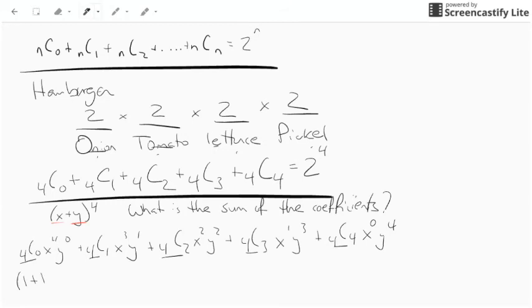I get one plus one to the fourth. That is going to be four choose zero times one to the fourth times one to the zero plus four choose one times one cubed times one to the one plus four choose two times one squared times one squared plus four choose three times one to the one times one cubed plus four choose four times one to the zero times one to the fourth.